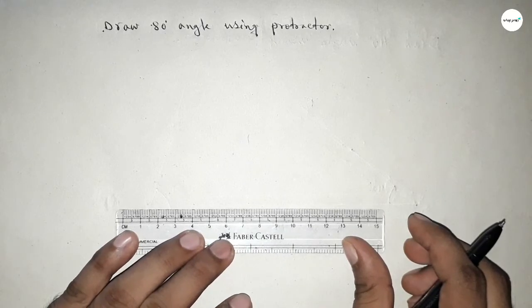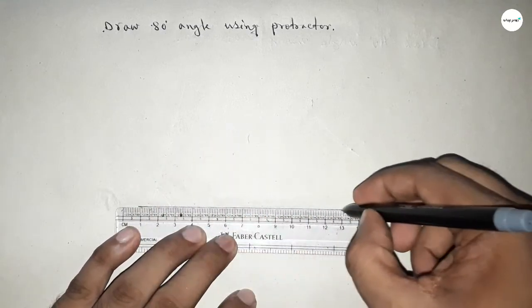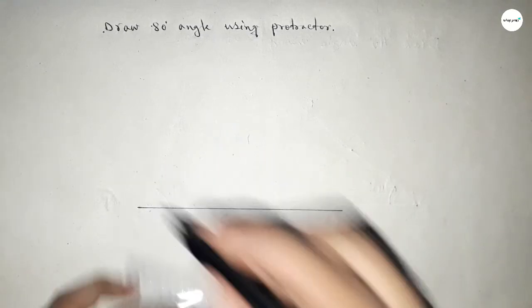First of all, we have to draw a line of any length. So first, drawing a line of any length here. Next, marking here a point.